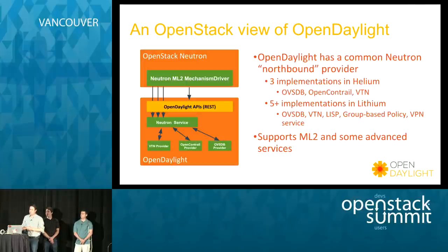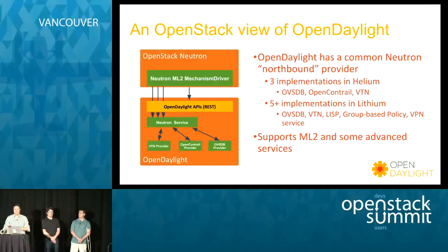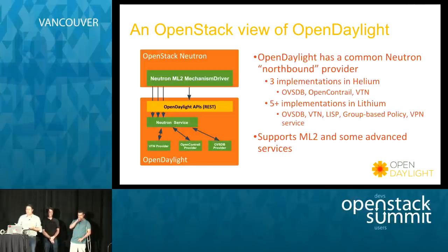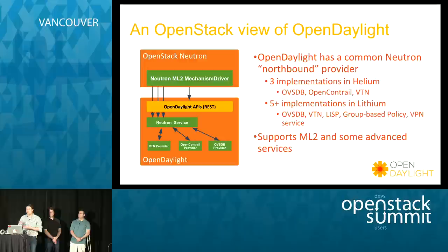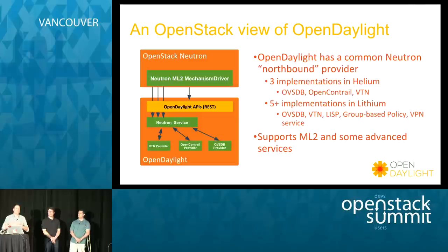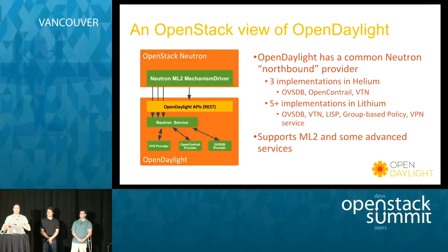It's experimental at this point, but it's out there. In Helium we have three implementations on the OpenDaylight side: OVSDB, the OpenContrail implementation, and the VTN project. There are a bunch of additional implementations coming in Lithium because work was done on the OpenDaylight side to split out the neutron service. The way it works is we essentially proxy the API calls from OpenStack Neutron over to OpenDaylight.